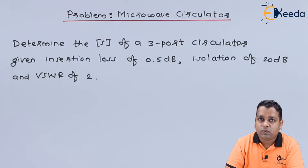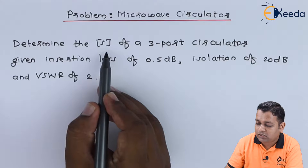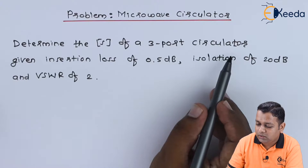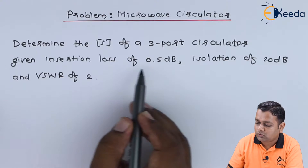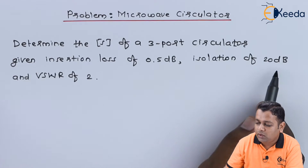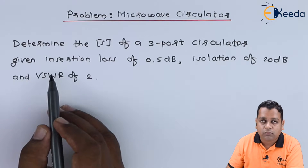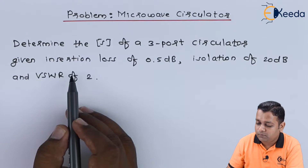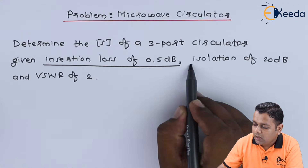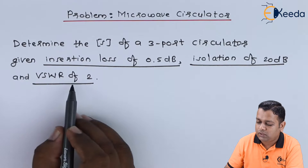The problem statement asks us to determine the scattering matrix S of a three-port circulator, given an insertion loss of 0.5 decibels, isolation of 20 decibels, and a VSWR of 2. We have been provided the values of insertion loss, isolation, and the standing wave ratio.